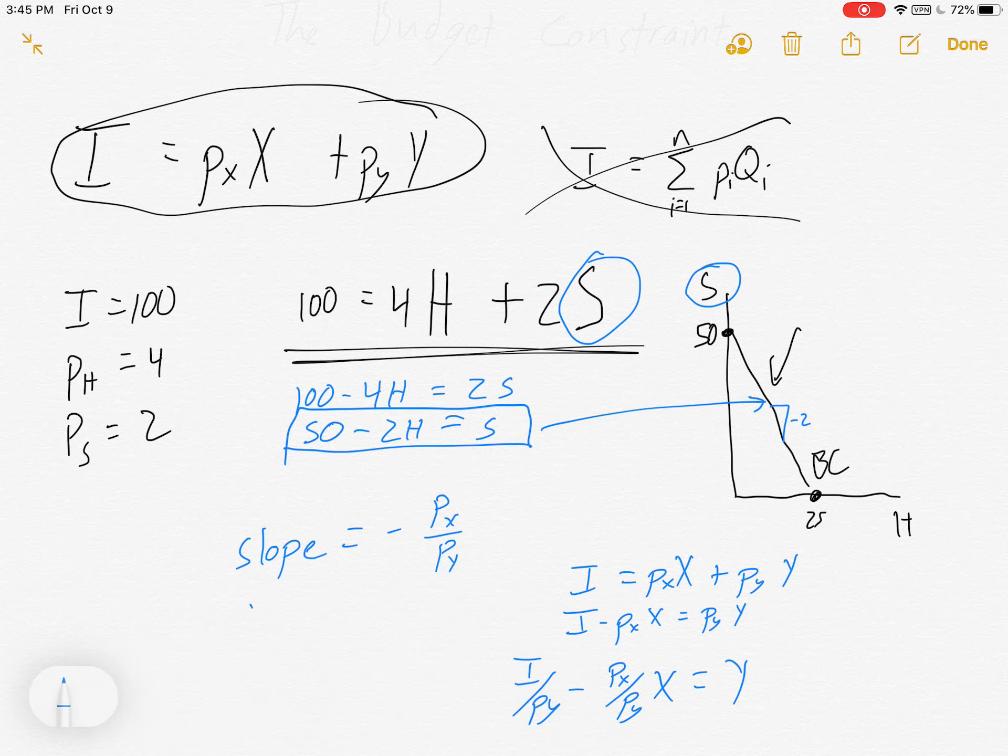And by the way, the horizontal axis intercept is I over P_X, but I don't need to solve for that right now. I don't know how helpful this is. It's kind of short and I'm kind of out of time, but hopefully it helps you make some sense of this stuff.